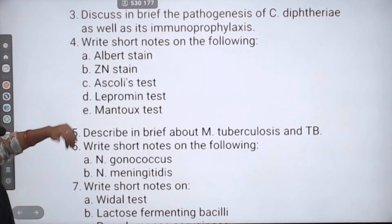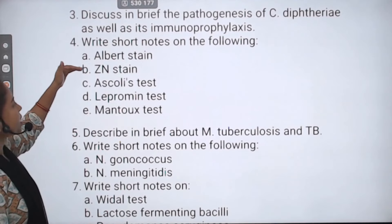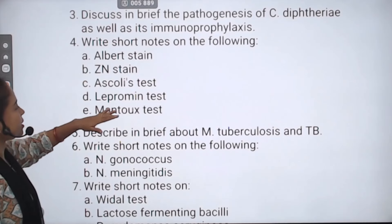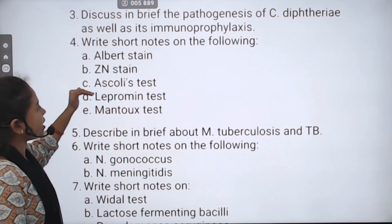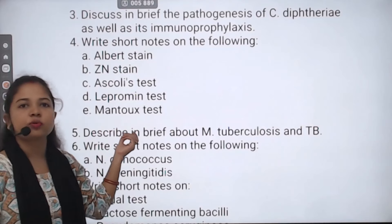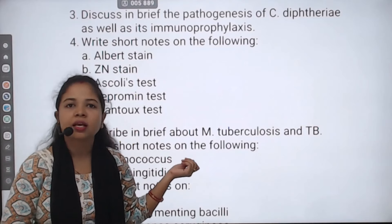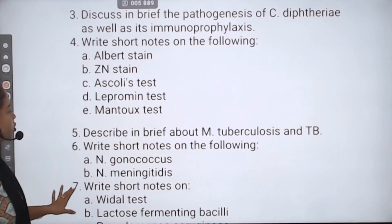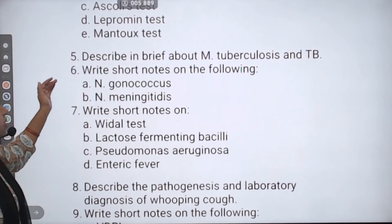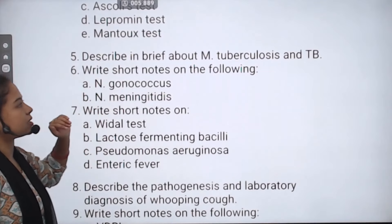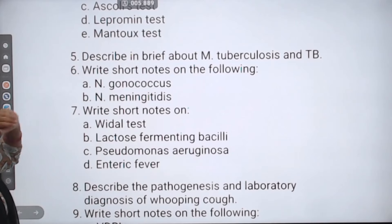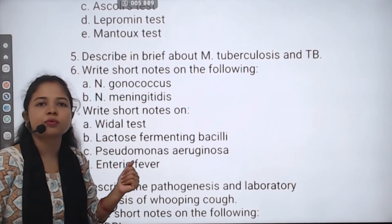Next: Albert staining has come again. Also ZN staining, Ascoli's test, Lepromine test, and Mantoux test — which is used for tuberculosis. You will have to mention all of these. Then, describe in brief Mycobacterium tuberculosis and TB — you will have to describe Mycobacterium tuberculosis in detail.